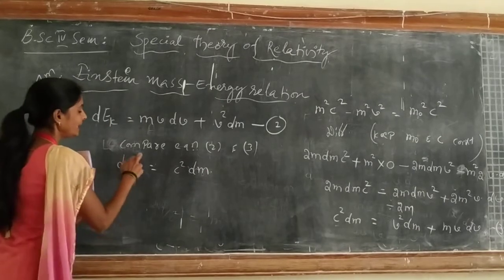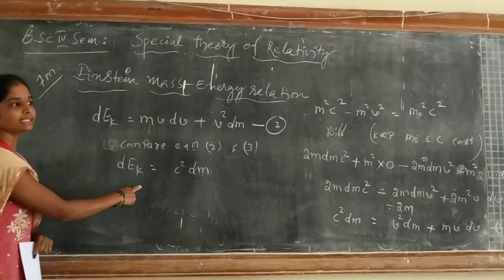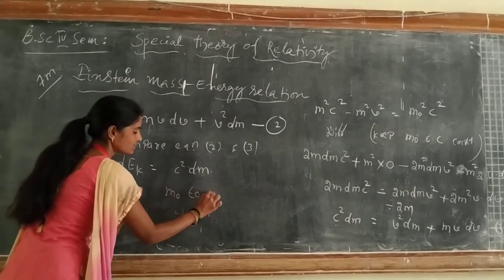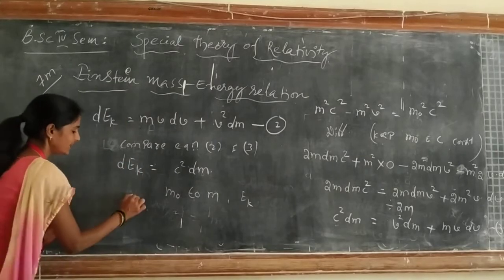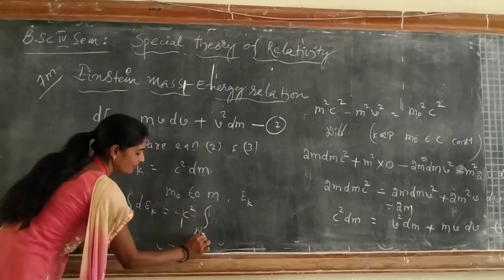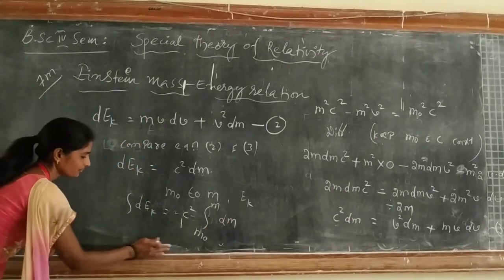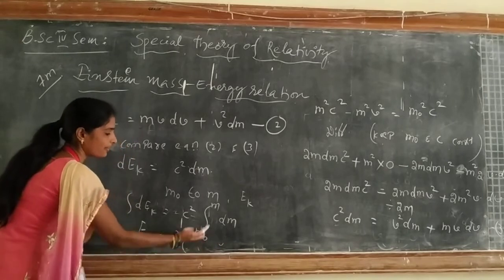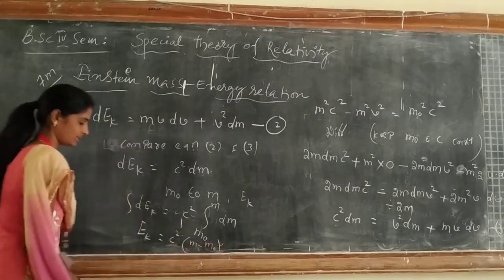Now we have to integrate this equation. When we integrate, we get the kinetic energy. The mass changes from M₀ to M. Therefore, integrating dEk = c²·dM with limits M₀ to M gives: Ek = c²·(M - M₀).